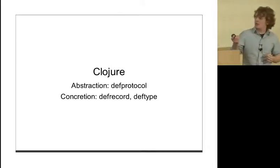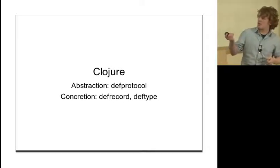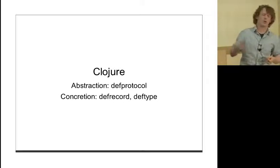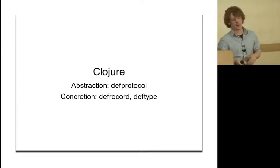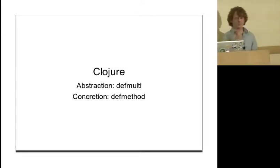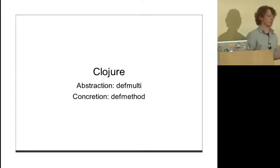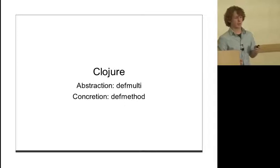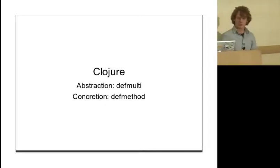Clojure has better abstractions than Java. We've got defprotocol as our abstraction, defrecord and deftype. The really cool thing that's different about Clojure is that our concretions - defrecord and deftype - we can't define functions on these things without making the abstraction first. In Java we can just make a concrete class and give it some methods, creating a concretion we're forced to depend on. defmulti and defmethod: you can think of defmulti as the abstraction and defmethod as the concretion.